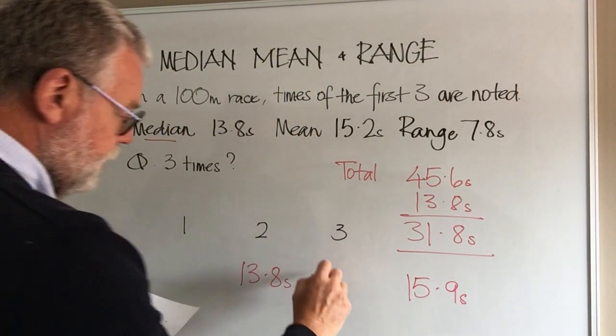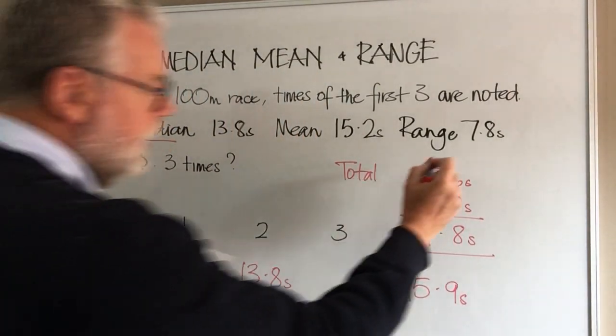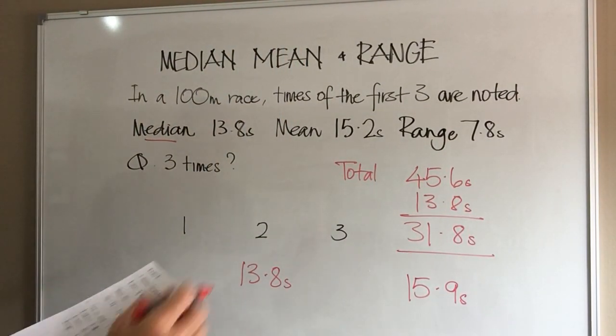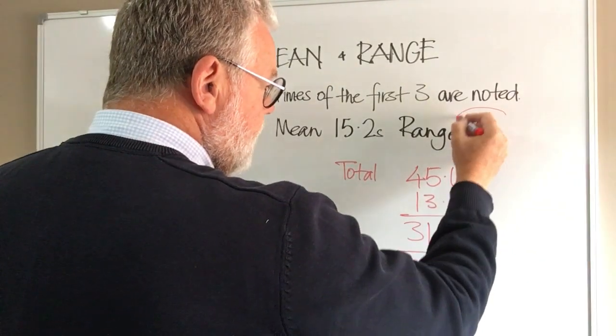Now we know we can't put 15.9 and 15.9 there. Why? Because the range has to be 7.8.